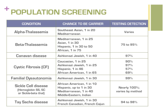The third column also lists how effective general testing is for each group. Testing is typically most effective for individuals who have the highest chance to be a carrier of the condition.